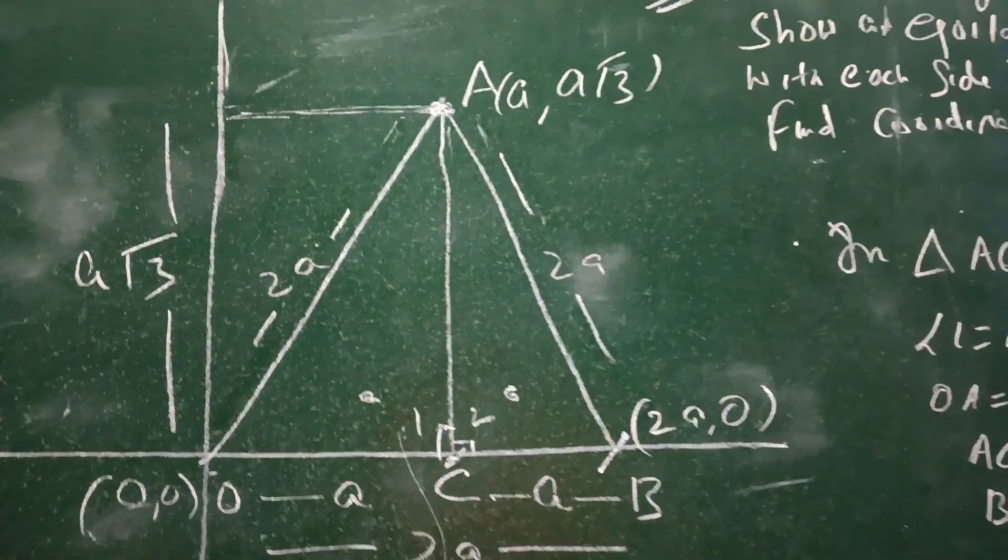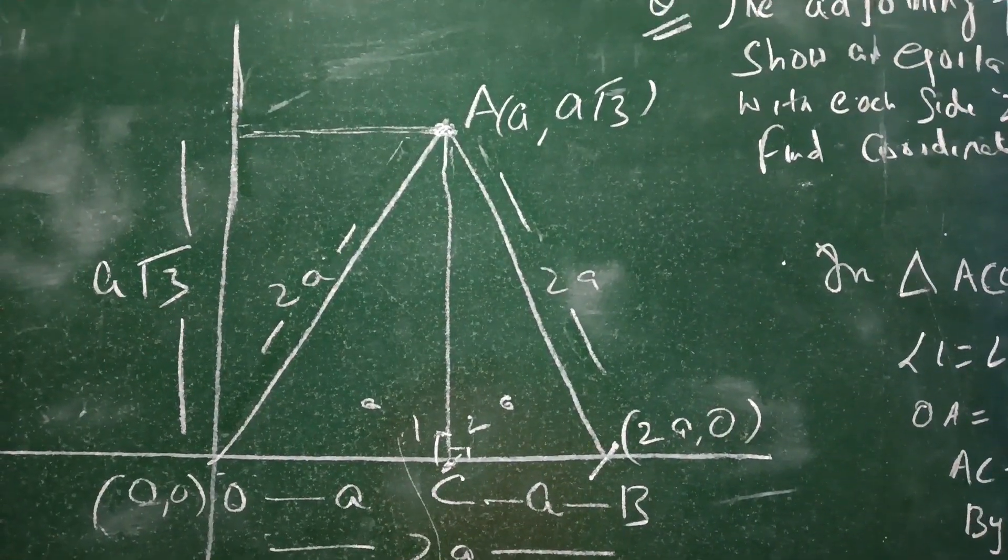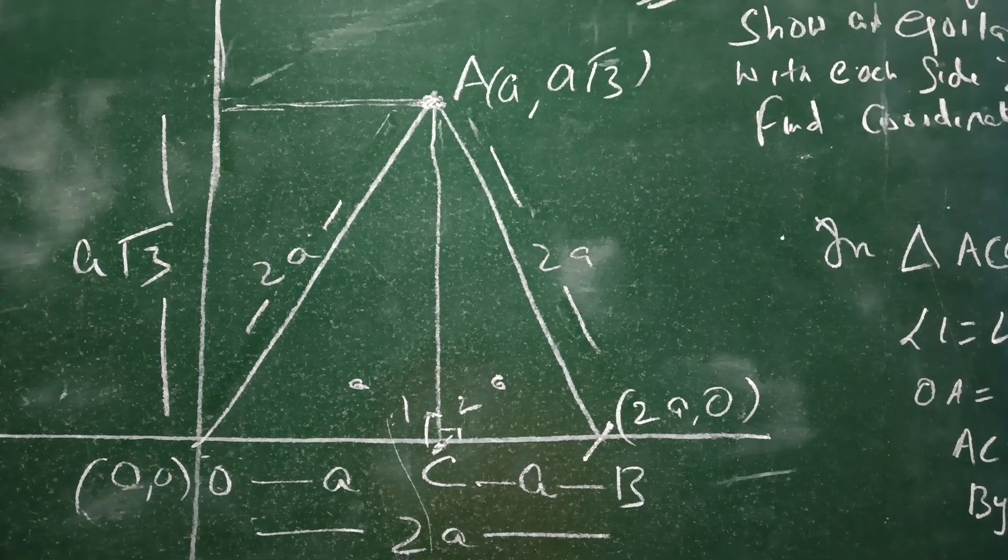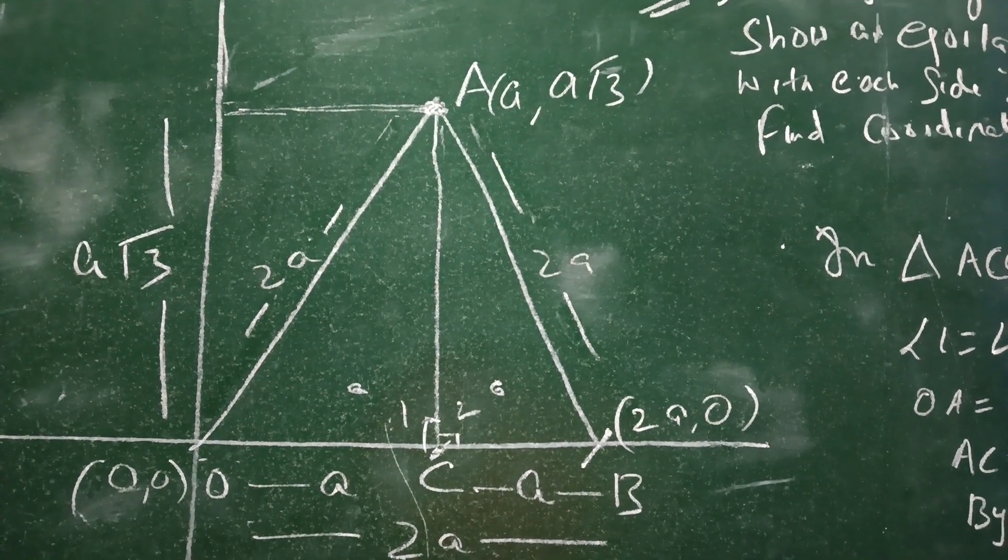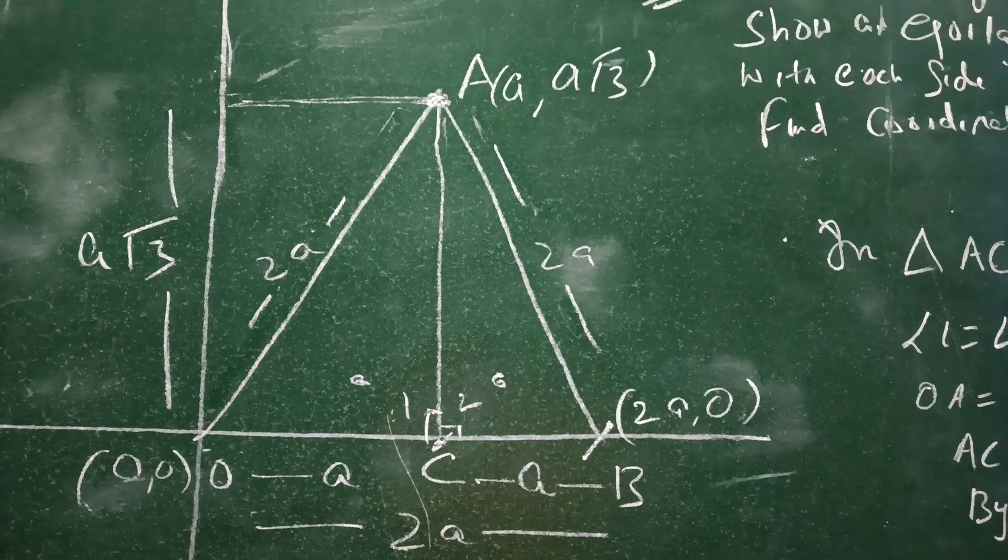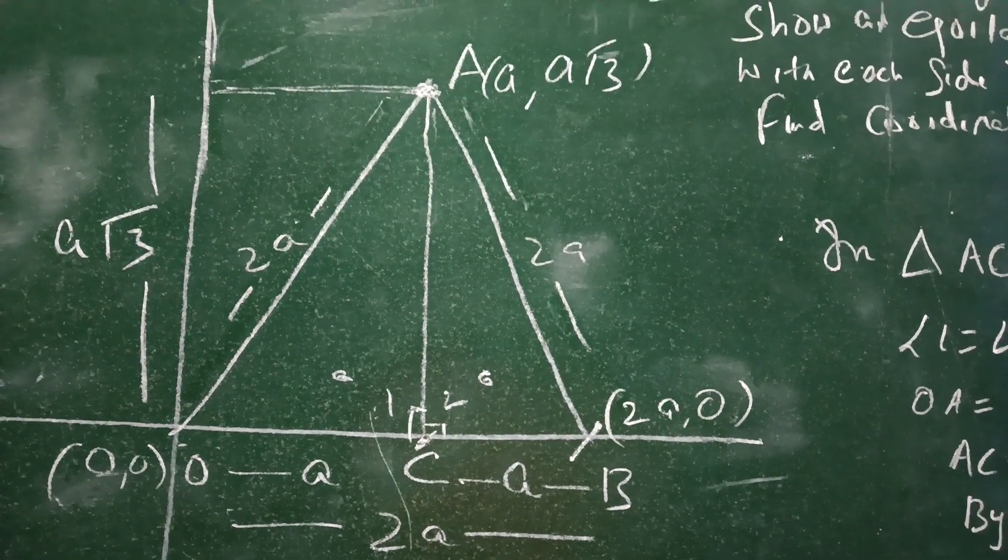So if you look over here, we have triangle OAB, where O is the origin. We need to show the coordinates of the vertices A, B, and O.